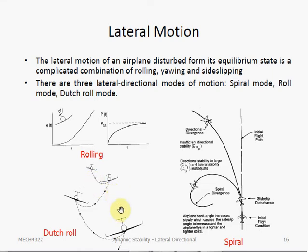The name dutch roll actually comes from the ice skating motion called dutch roll because both have a similar kind of motion. Dutch roll is a second order motion and this motion can actually be quite bothersome to passengers if the amplitude of the oscillation is high.